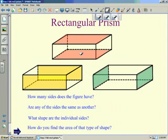As we look at question 1, how many sides does this figure have? It has a top and a bottom, a front and a back, and a left and a right, thus giving us a total of 6 sides.